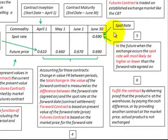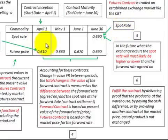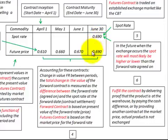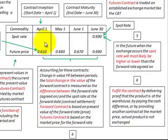In the future when the exchange occurs, the spot rate will most likely be either higher or lower than the forward rate agreed on. The seller — the farmer — would have a loss because he gave up something of greater value than what he received. He could have received 69 cents a pound but only received 61 cents a pound. The buyer — the cereal manufacturer — had a gain because he received something worth 69 cents a pound but only paid 61 cents a pound.